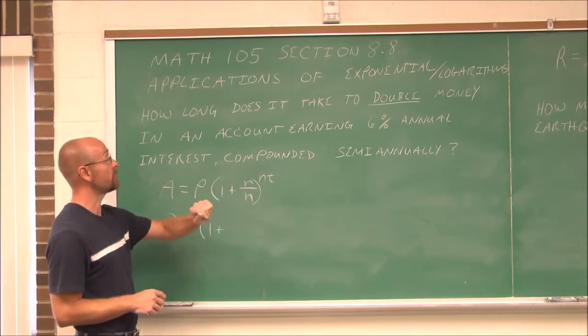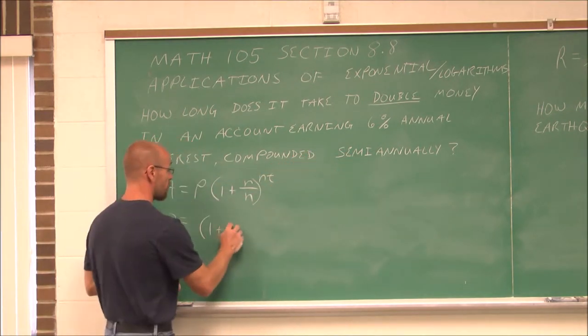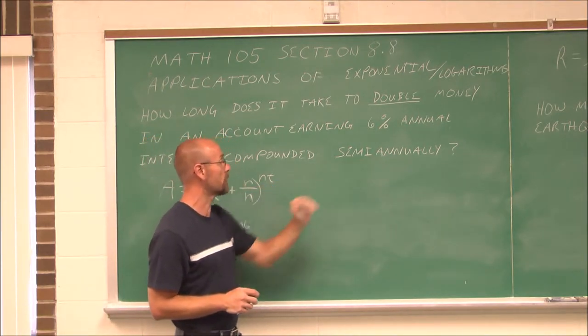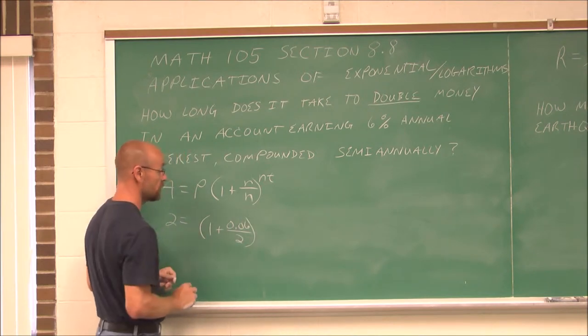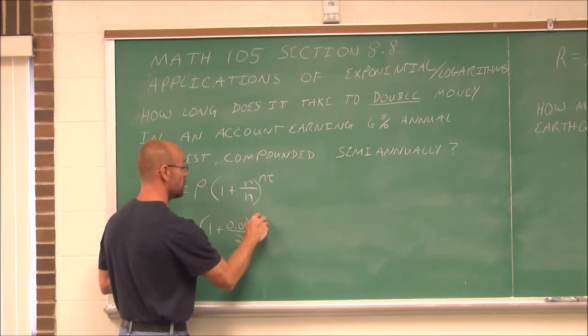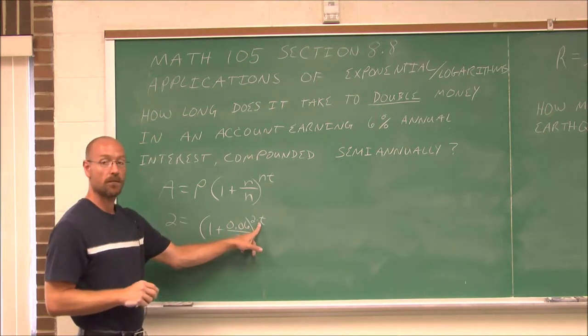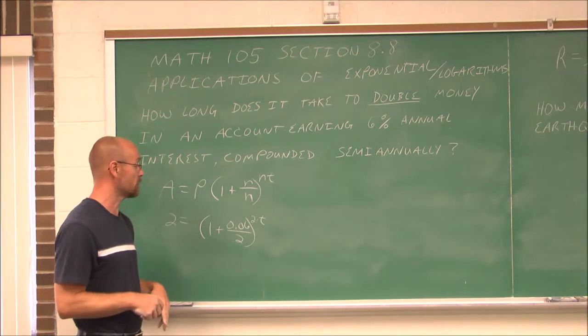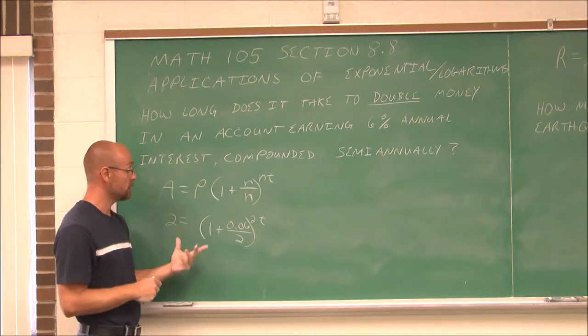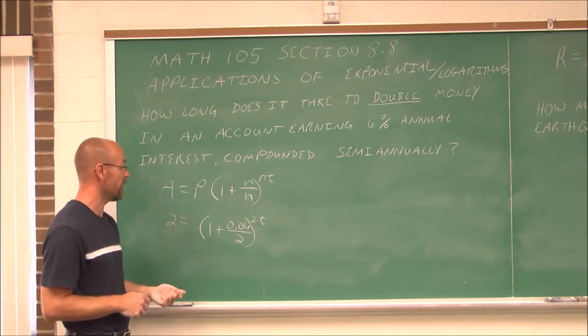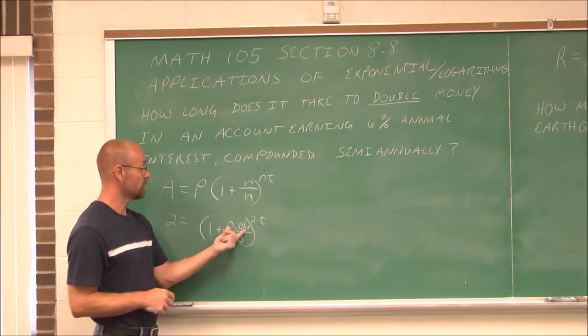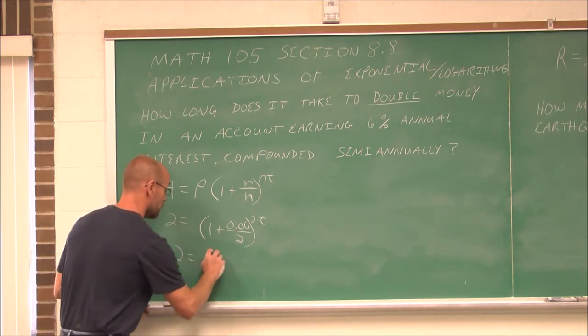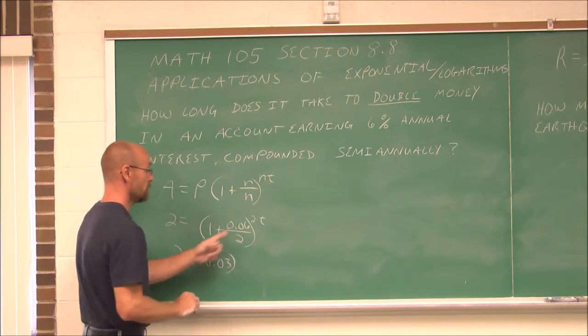I'm just going to fill in my information. Rate compounding raised to the compounding times time. We know our rate is 6%, so I write it as a decimal over the number of compounding semi-annually. Hopefully we recall that means twice a year. So my n is 2 raised to the 2 times t. 0.06 divided by 2 is 0.03. 1 plus 0.03 is 1.03 to the 2t.